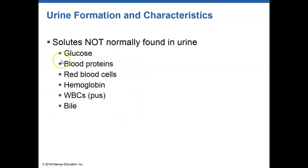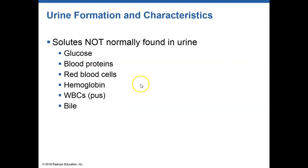Things we don't want to see in urine include glucose — if you've had a glucose urine test, they're checking for glucose because glucose is always normally reabsorbed and its presence is a problem. Blood proteins like albumin should not appear in urine, as that indicates something is wrong with the filtration membrane. Red blood cells in urine is a serious problem, as are hemoglobin, white blood cells, and bile.